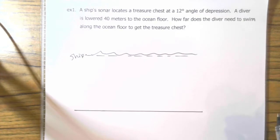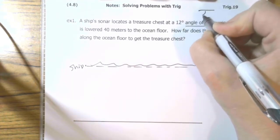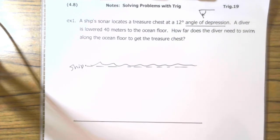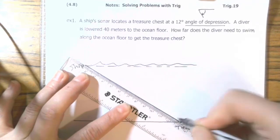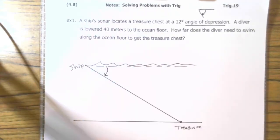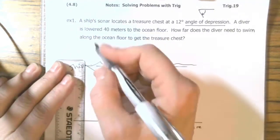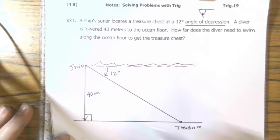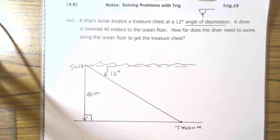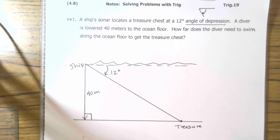And it says that at an angle of depression. Now, an angle of depression, remember, is measured from horizontal down. That's your angle of depression. So, the angle of depression to the treasure, so here's your treasure, is 12 degrees. So, if I draw a line from the ship to the treasure, the angle of depression to the treasure is 12 degrees. Then it says the diver is lowered 40 meters to the ocean floor. So, we're assuming straight down 40 meters, which is, of course, perpendicular to the ocean floor. And we're trying to figure out how far the diver needs to swim along the ocean floor to get the treasure chest. So, we're looking for distance X, basically.